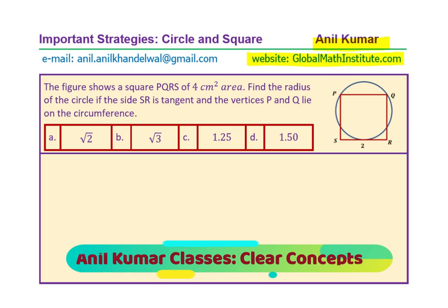In this video we have taken up a very interesting question which is based on a circle and a square. From an examination point of view like SAT, we are going to discuss a very important strategy today. The question is: the figure shows a square PQRS of 4 cm² area. Find the radius of the circle if the side SR is tangent and the vertices P and Q lie on the circumference.